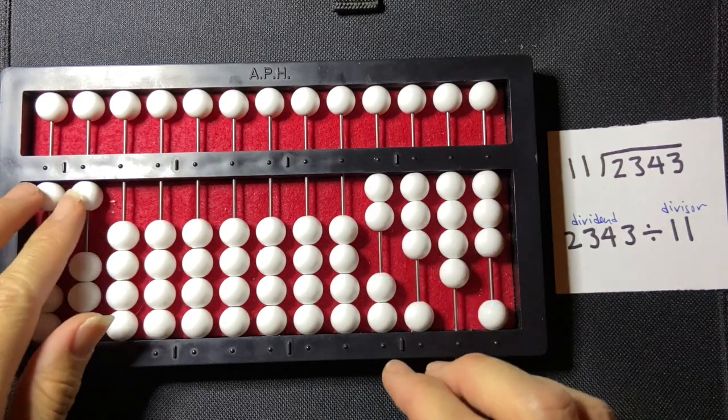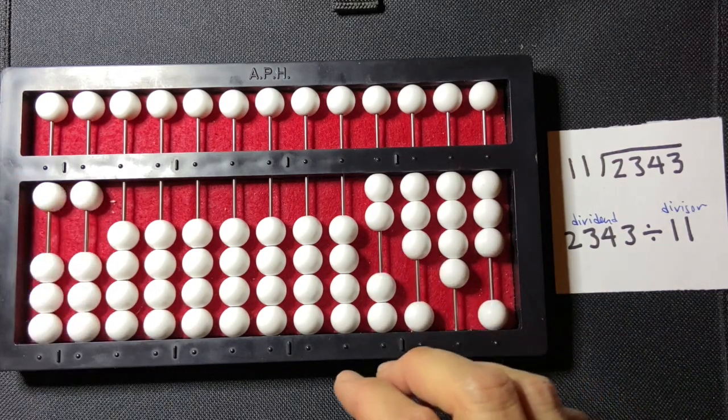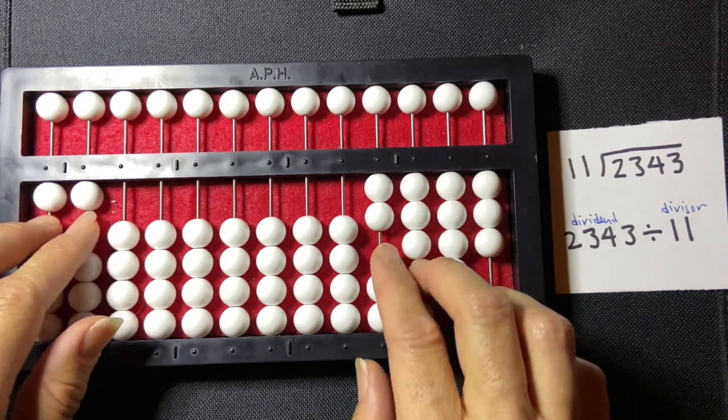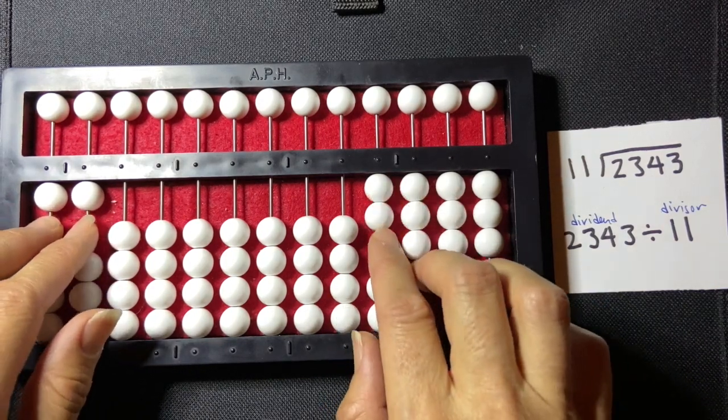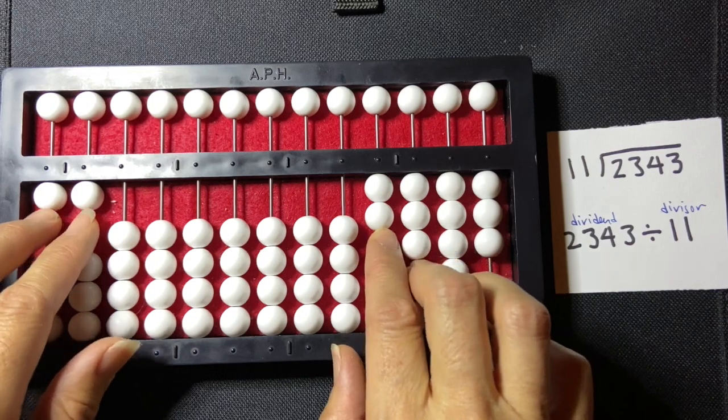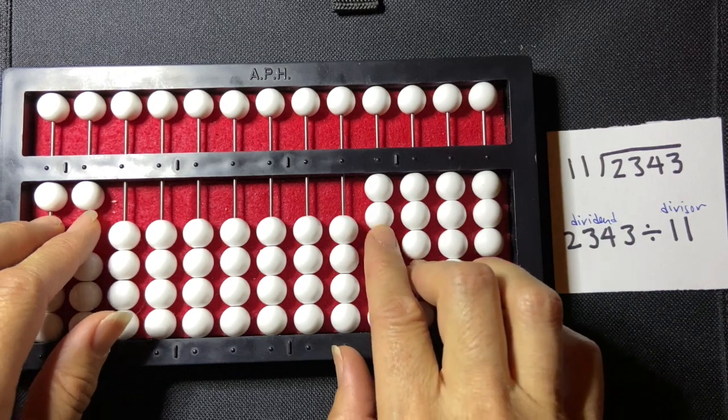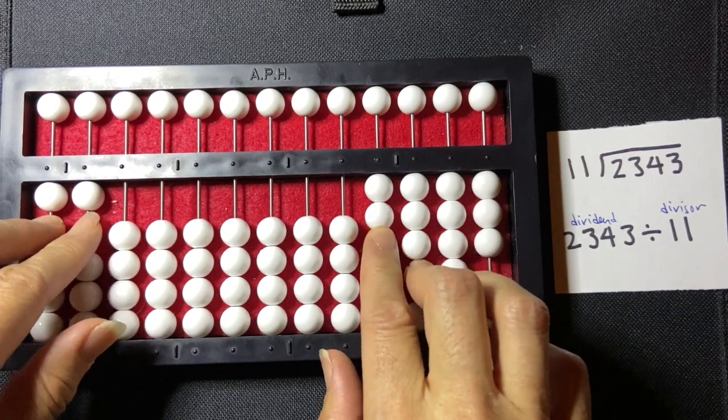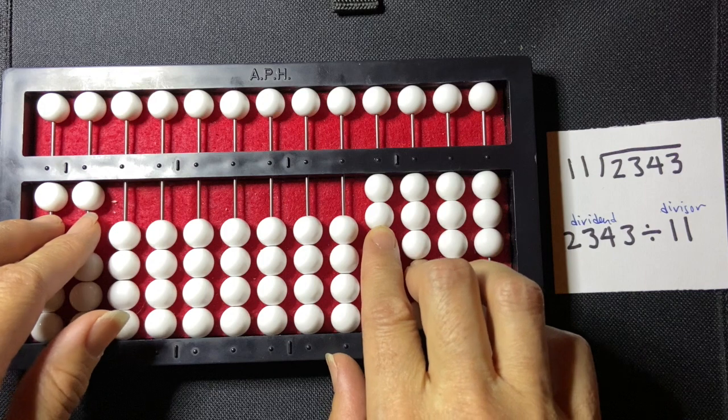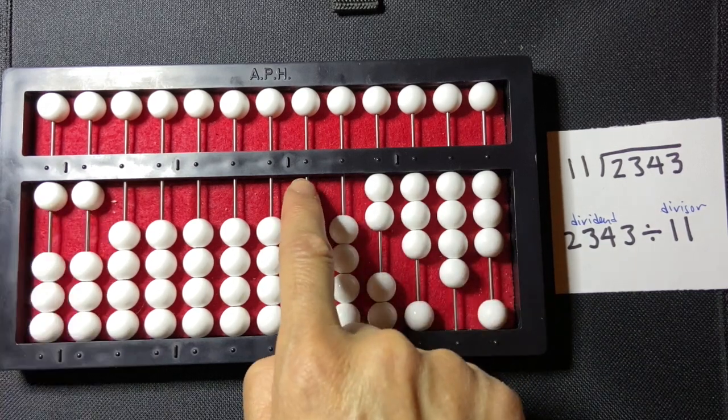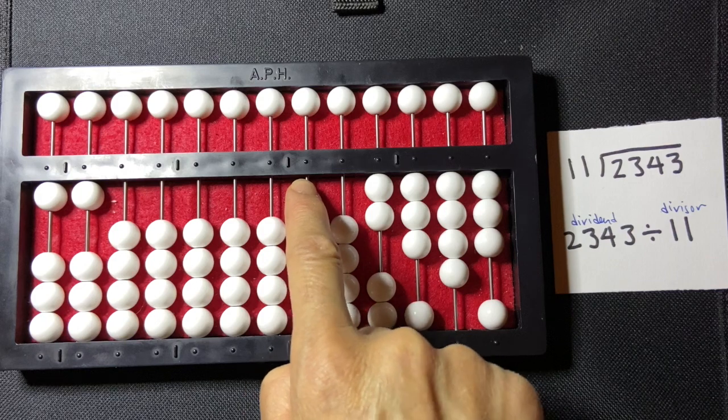And so I have two numbers in my divisor, the 1 and a 1, and then in my dividend I'm going to compare it to the first two numbers here in my dividend. So, is 11 smaller than 23? Yes, it is. So if the divisor is smaller than the dividend, then I'm going to skip a rod and I'm going to start over here in my 100,000s rod.